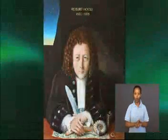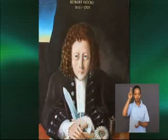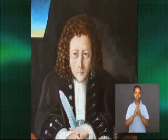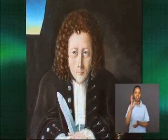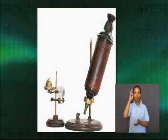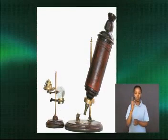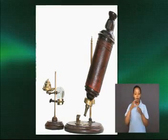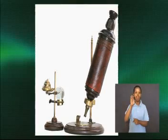Cells and cell development were discovered and advanced by a group of European biologists in the 17th century. Robert Hooke was an English scientist who was the first person to identify a cell in 1665. Hooke made the microscope that he used to identify the cell. The microscope looked similar to a telescope.